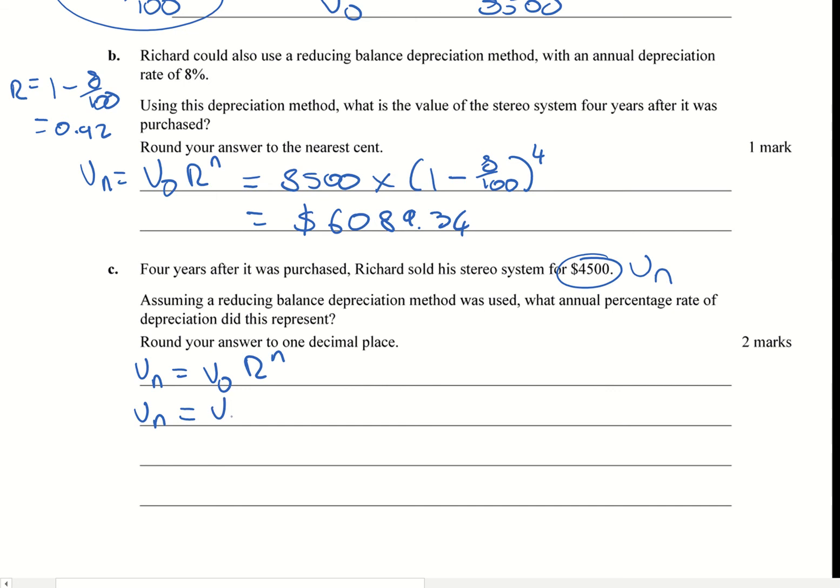So if I expand that out, I'm going to put Vn here, I'm going to have V0 times 1 minus R over 100 to the power of n. In the case like this, and remember one decimal place is the answer, I would be using solve. Let's have a look as to how that looks like on the calculator.